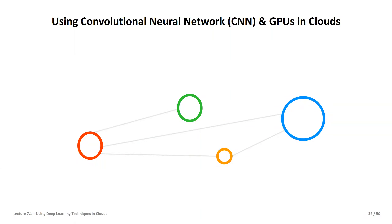Welcome back to Cloud Computing and Big Data, lecture seven part two on using deep learning techniques in different cloud environments. In part one we explored Amazon EC2 AMI images and instances, which provide a nice way to control the jungle of different machine learning tool versions in an instance accessible via SSH, and with a trick, also via Jupyter.